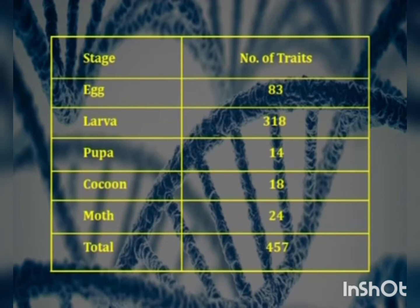The egg stage has 83 traits, larva has 318, pupa has 14, cocoon has 18, and moth has 24 traits, giving a total of 457 hereditary traits in the mulberry silkworm.